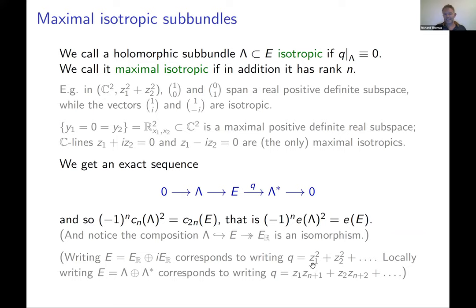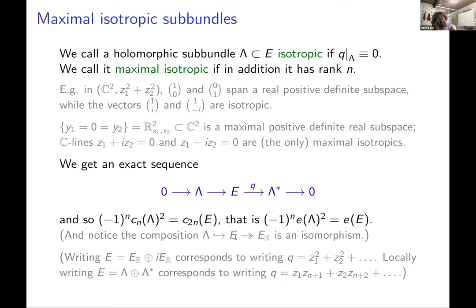In general, if you have a maximal isotropic then by a version of Gram-Schmidt without square roots, E is Zariski locally trivial. But there are plenty of quadratic bundles that are not Zariski locally trivial. So you can't define the class by just choosing any maximal isotropic, because you also wouldn't know whether to choose Λ or Λ∨ — and we haven't used the orientation yet.